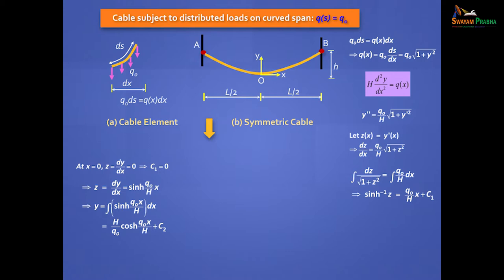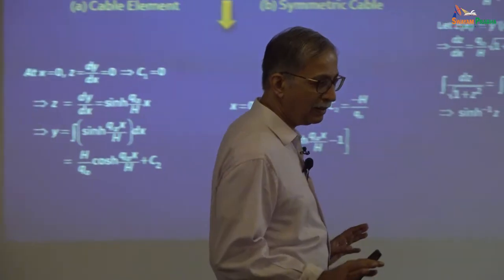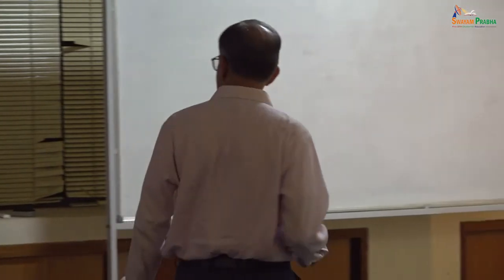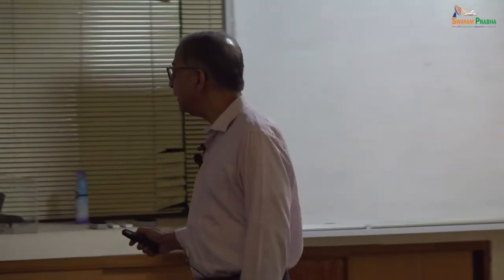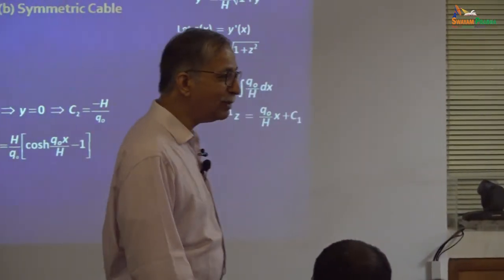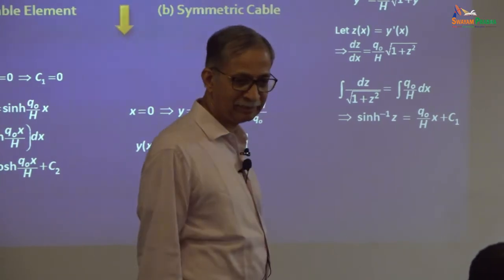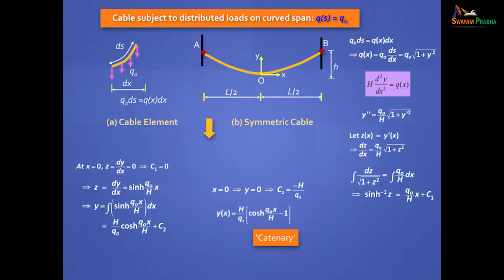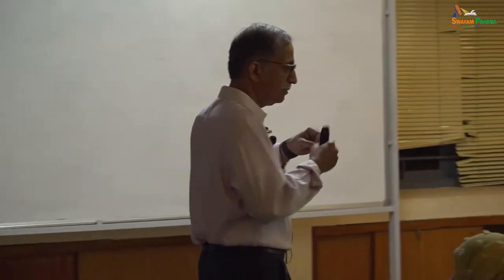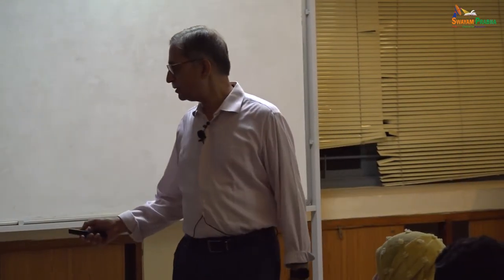And if you apply the boundary conditions, you will get this equation for your cable profile. It's just important enough to know that the cable profile is not a parabola — it is this. In fact, if you take a simply supported beam and give this loading, then the shape of the bending moment diagram will be a catenary shape. This is called a catenary. Catena means chain — I think it comes from Greek or Latin.